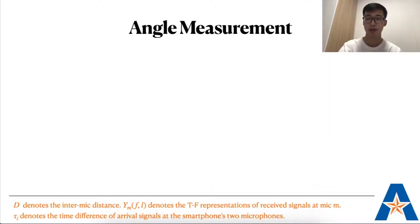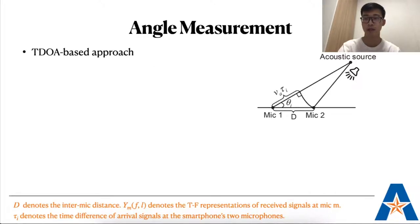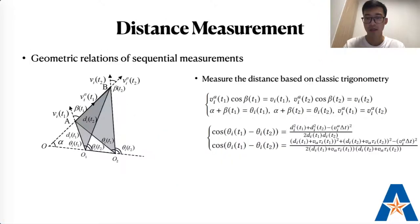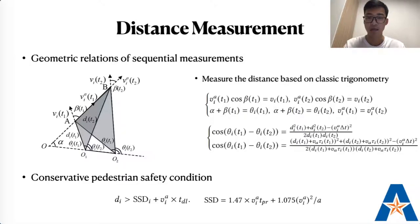This module estimates the vehicle's direction of arrival, DOA, with respect to the pedestrian. Its measurement is achieved by analyzing the time difference of arrival, TDOA, at the receiver's two microphones, which can be calculated by applying the MGCC function over the microphones' received signals. With all measured vehicles' motion status including angle, speed, and distance, we then calculate the Safe Stopping Distance, SSD, for each vehicle to evaluate if it can cause collision hazards.